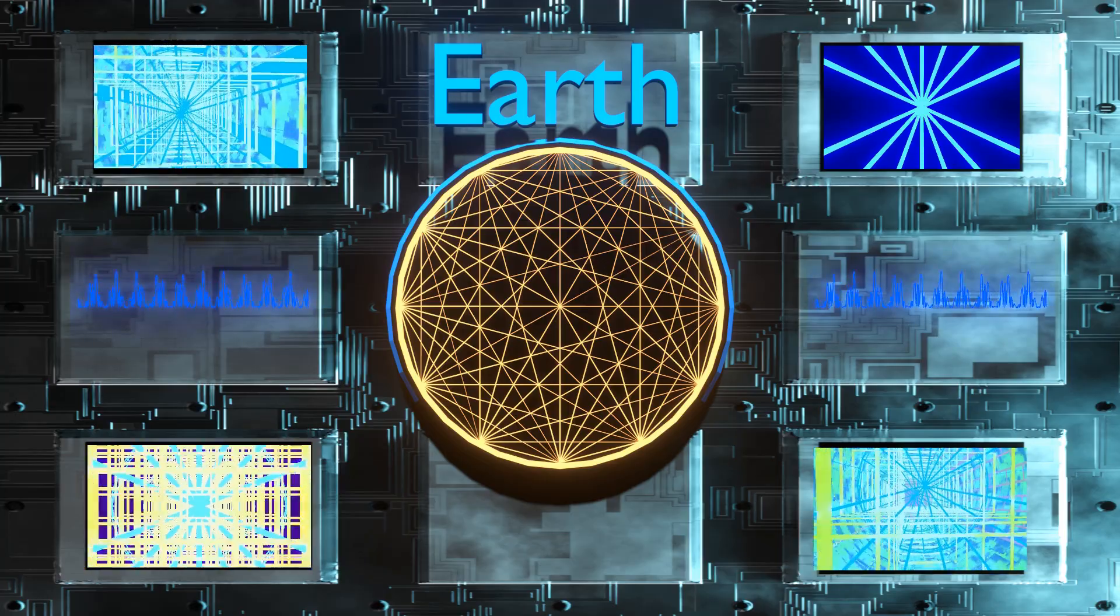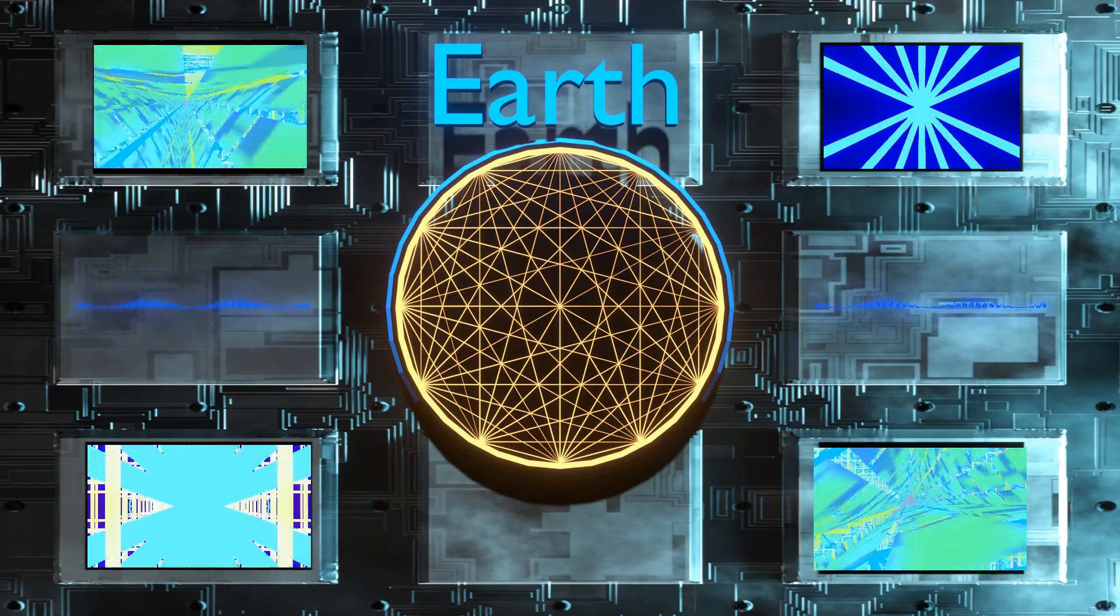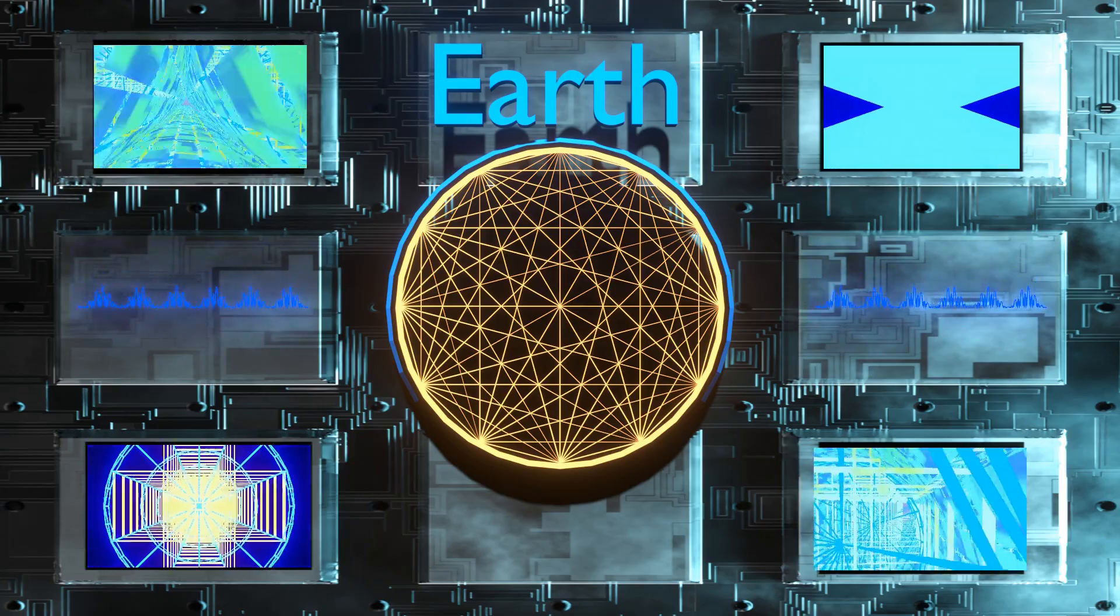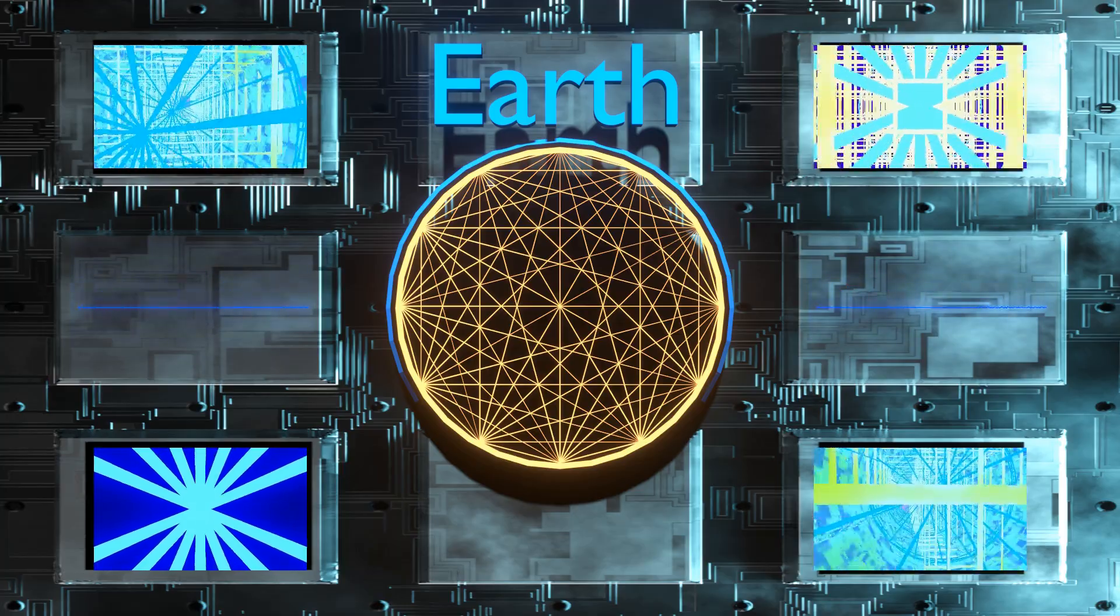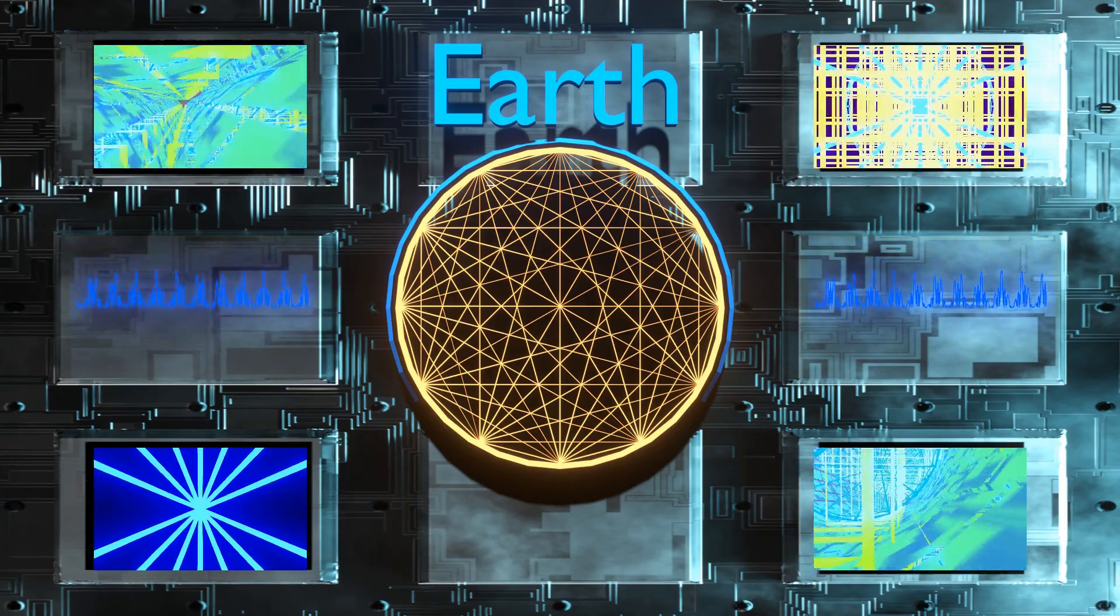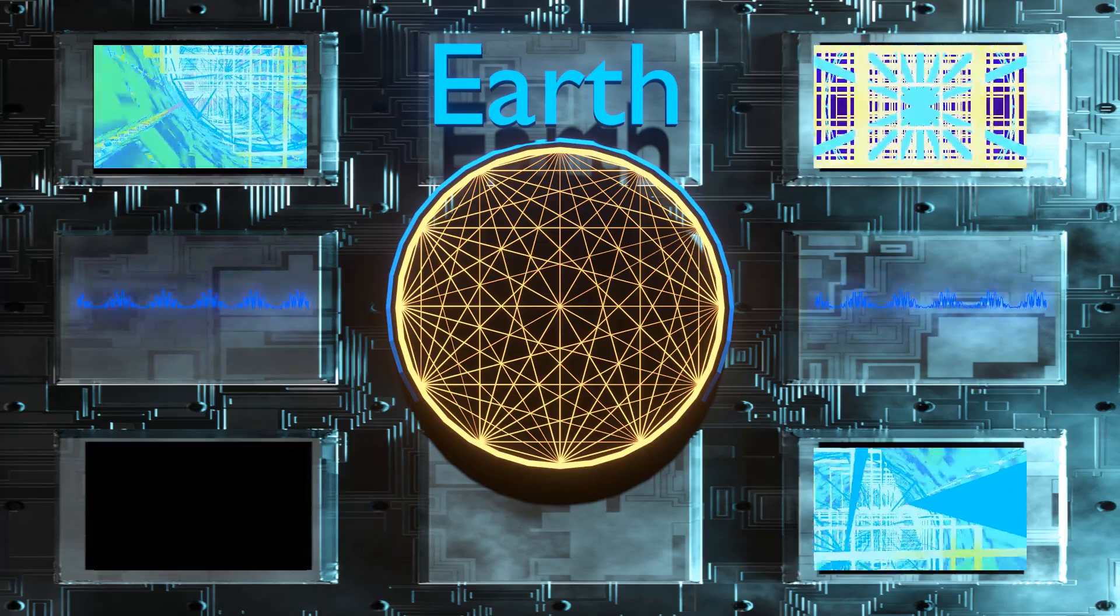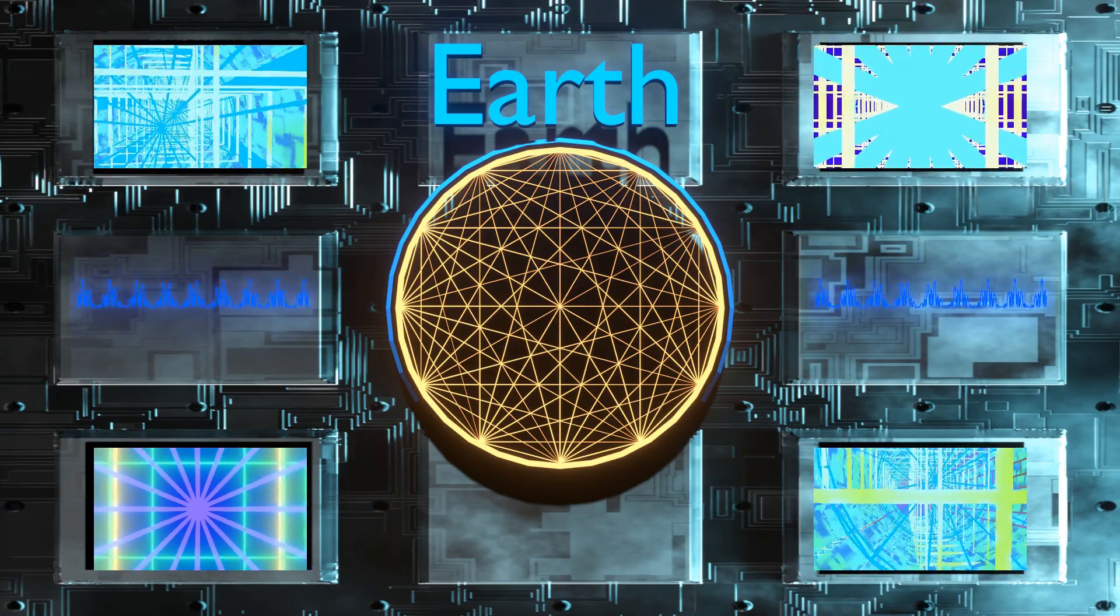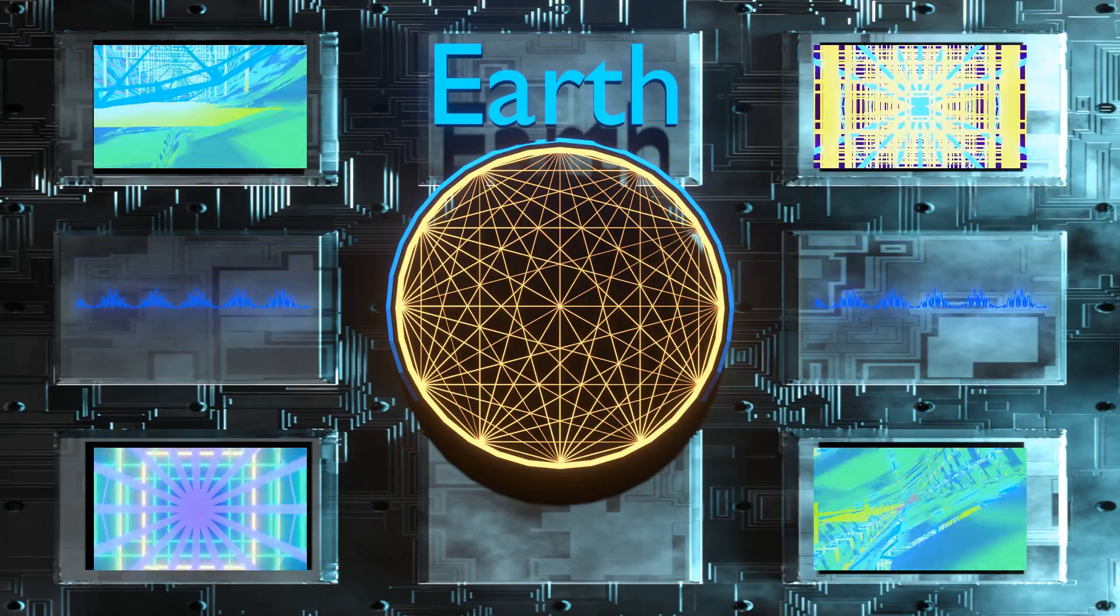The breakthrough came in 1953 when Stanley Miller and Harold Urey, two American chemists, conducted an experiment that simulated the conditions of early Earth. They filled a closed system with a mixture of gases—methane, ammonia, hydrogen, and water vapor—and passed electrical sparks through it to simulate lightning. Within days, the experiment yielded amino acids, the building blocks of proteins, proving that complex organic molecules could indeed form spontaneously from simpler compounds.